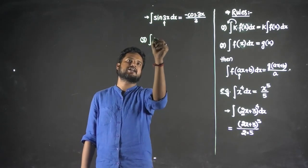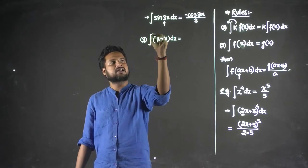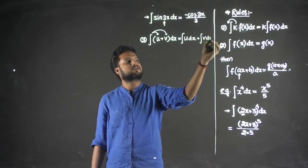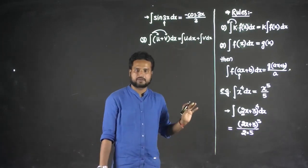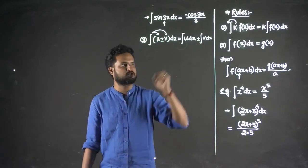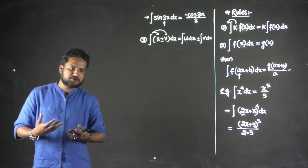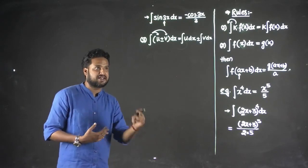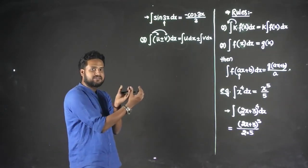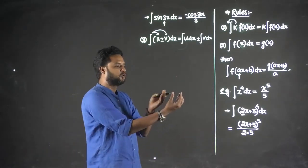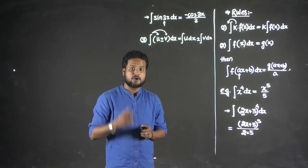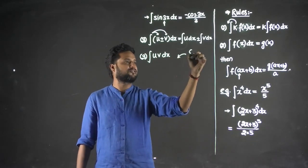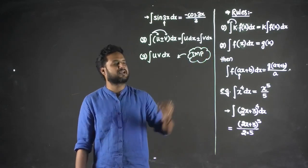Third rule: integration of (u + v). Just like derivatives, integration can be separated — you take integration of u first and then integration of v. Any constant term can be taken outside. For (u − v), the same applies; the arithmetic sign, plus or minus, is preserved. However, if two terms are multiplied, this rule cannot be followed — you cannot say integration of (u × v) equals integration of u times integration of v.